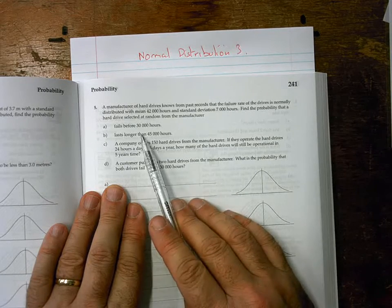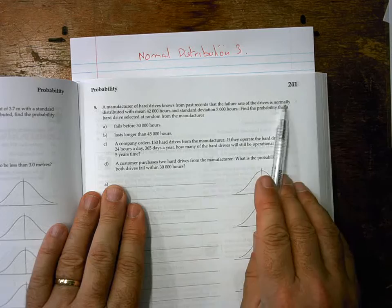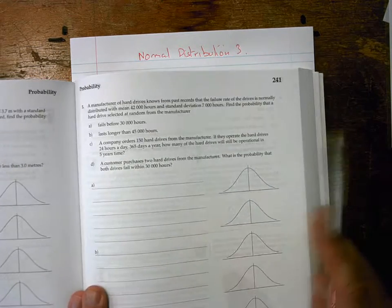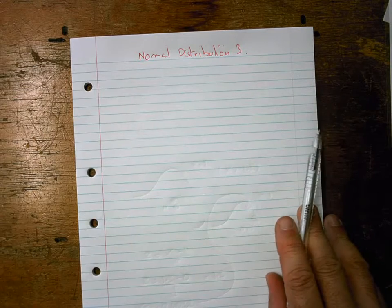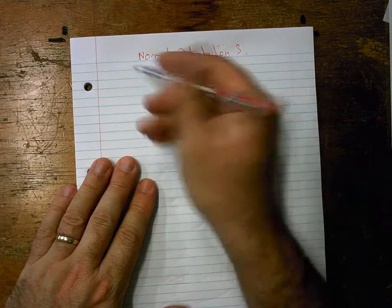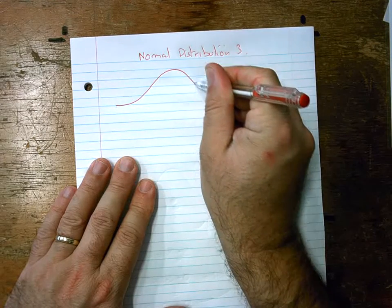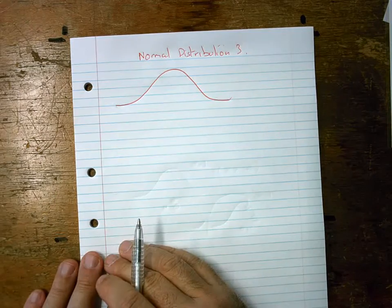The first clue is it told you it's normally distributed, and your instinct needs to be that when it says normally distributed, the first thing you do is draw the picture. That's what a normal distribution looks like.